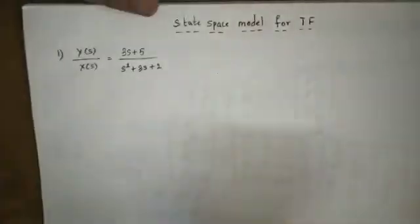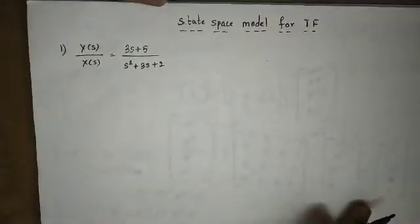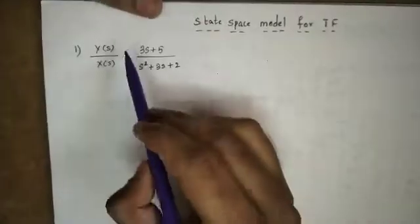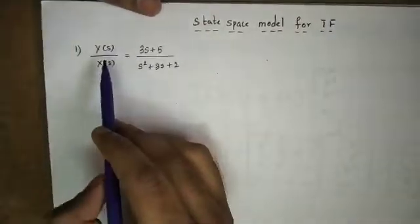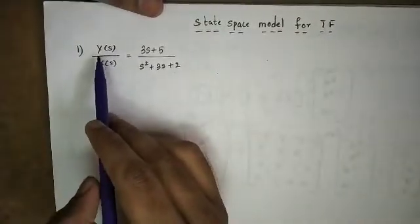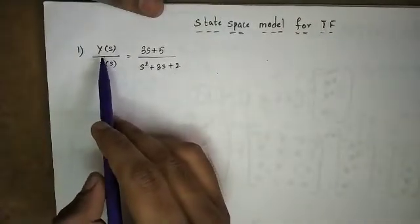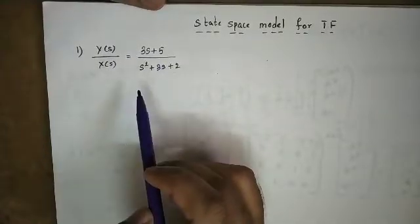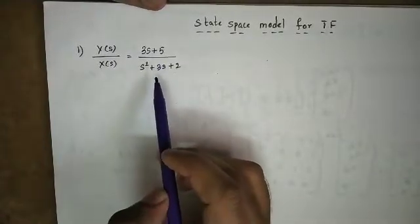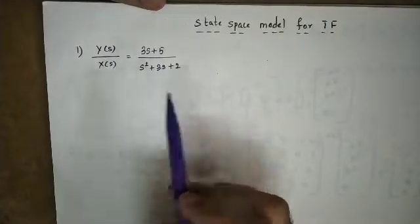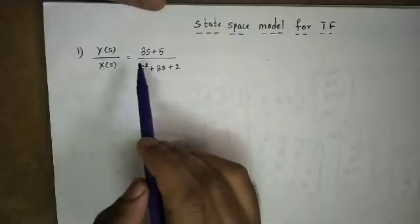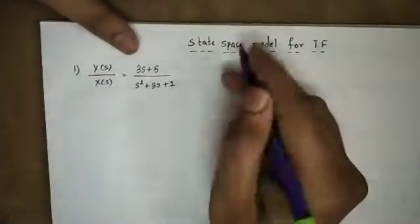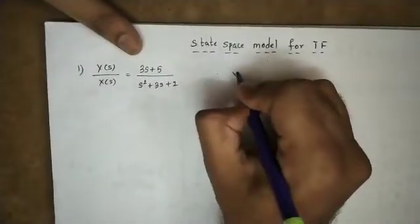Here we go — State Space Model for Transfer Function. The transfer function is: Y(s) divided by X(s) is equal to 3s plus 5, divided by s-squared plus 3s plus 2. The same thing is to find the State Space Model.